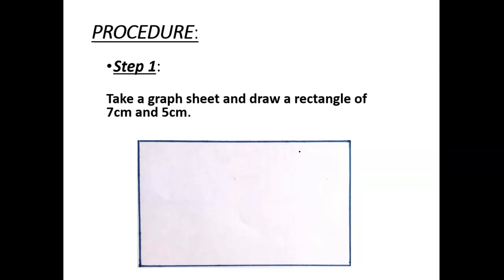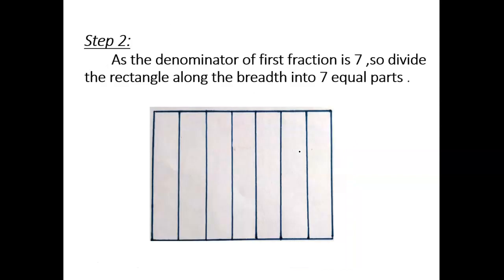Of length 7 centimeters and breadth 5 centimeters. Step 2: As the denominator of the first fraction is 7, divide the rectangle into 7 equal parts along its length into 5 equal parts.